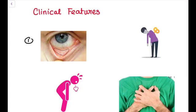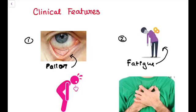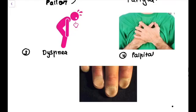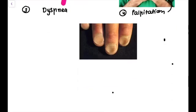The first is pallor. You can very well appreciate the pallor. Second is fatigue. Third is dyspnea, that is difficulty in breathing. Fourth is palpitation.